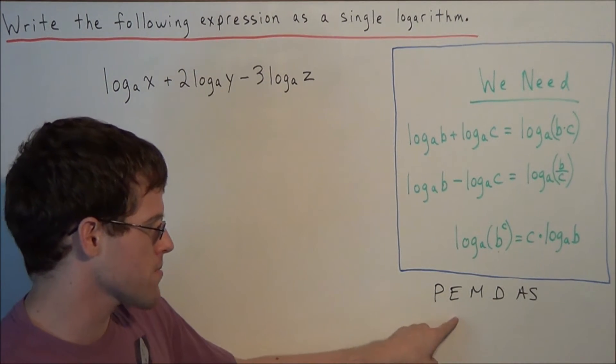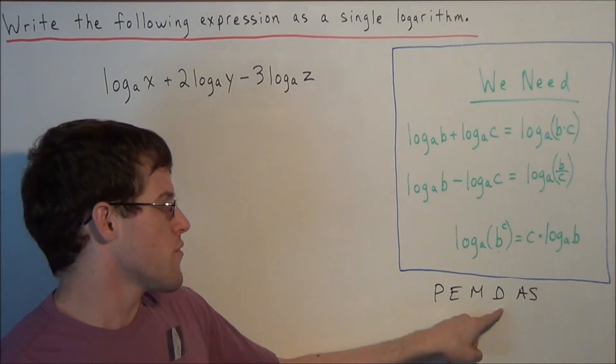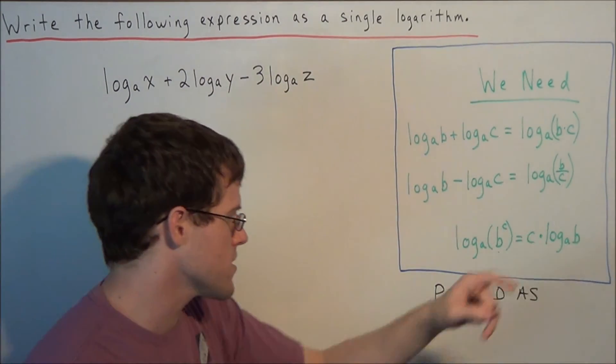Please excuse my dear Aunt Sally. This tells us to do parentheses, exponents, multiplication, division, addition, subtraction. That's the order we're going to carry out these operations.